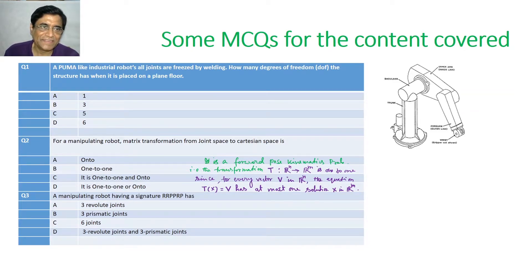First question: if PUMA-like industrial robots, all joints are freezed by, say, welding. Welding is a joining operation. Those not mechanical engineers should know. So, how many degrees of freedom this structure has when it is placed on a floor, on a plain floor?